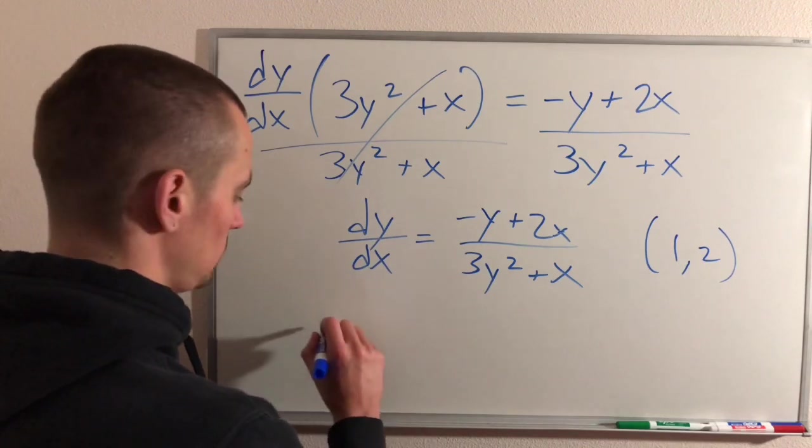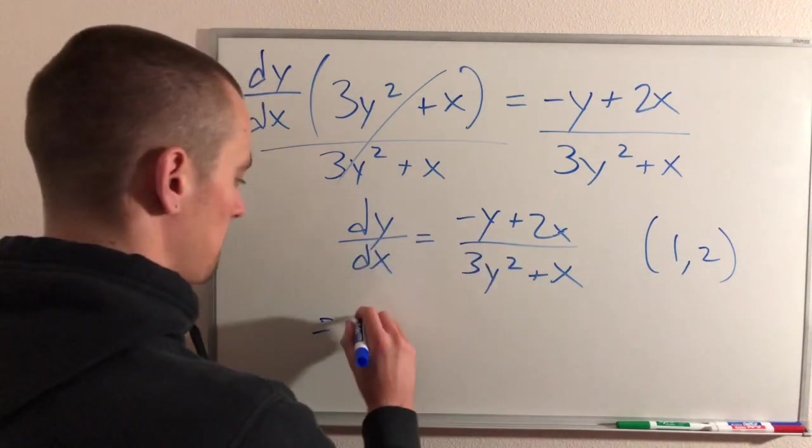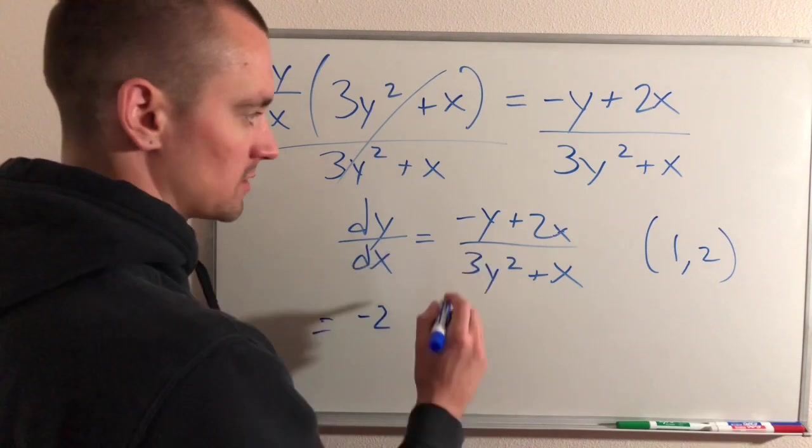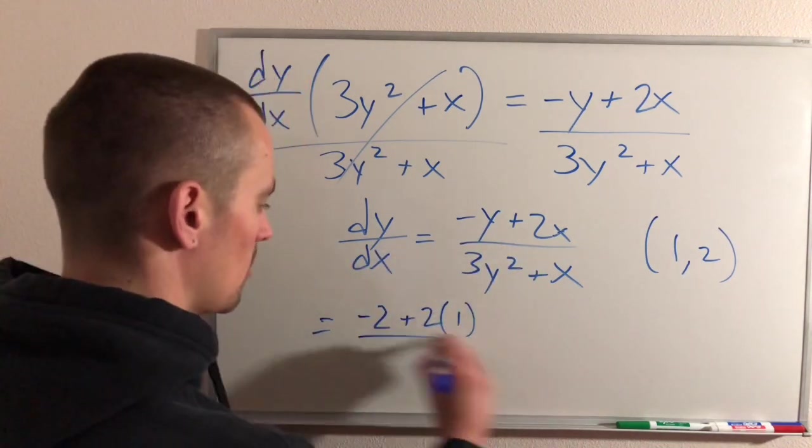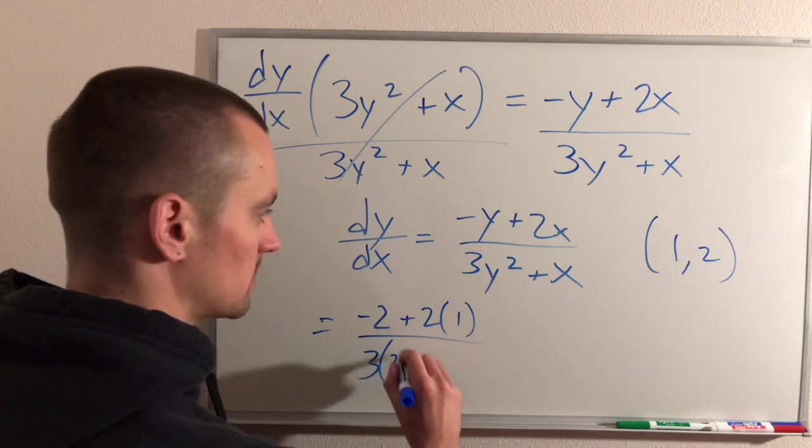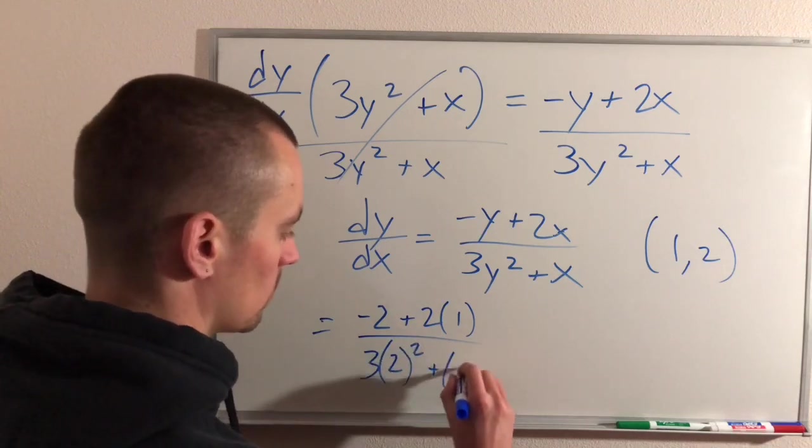So doing that will give us (-2 + 2(1)) / (3(2)² + 1).